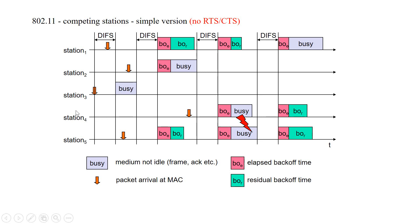Station two has a total back-off time of only BOE and gets access to the medium first. The back-off timers of stations one and five stop, and they store their residual back-off times. A new station entering has to choose its back-off time from the whole contention window, so the stored older values are on average lower. Station four also wants to send a packet. After the DIFS waiting time, three stations try to get access, and stations four and five accidentally have the same back-off time.